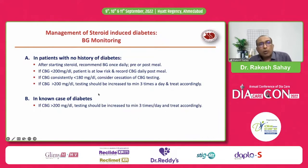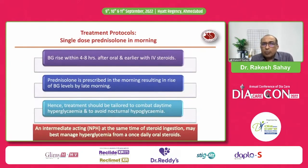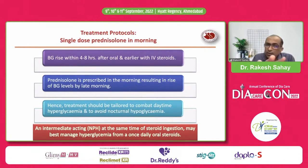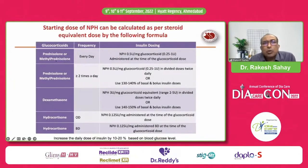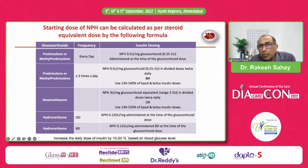For those on a single daily dose of prednisone — an intermediate-acting steroid — NPH is best given in the morning at the same time as steroid ingestion. You can calculate the dose: use NPH at 0.5 units per milligram of glucocorticoid, given along with the glucocorticoid in the morning. For those using it more than twice per day, you may need a slightly higher dose given twice daily; the dose may range from 0.25 to 1 unit per milligram but 0.5 units/mg is a good starting point.